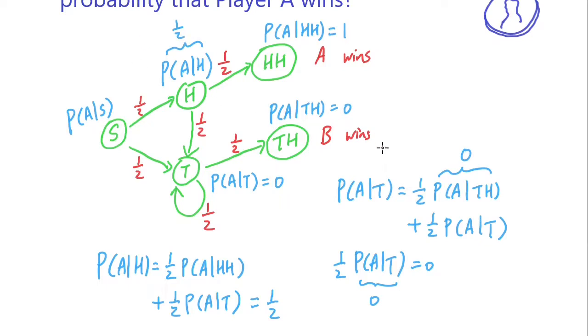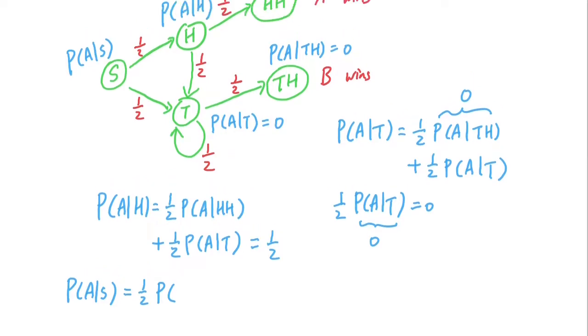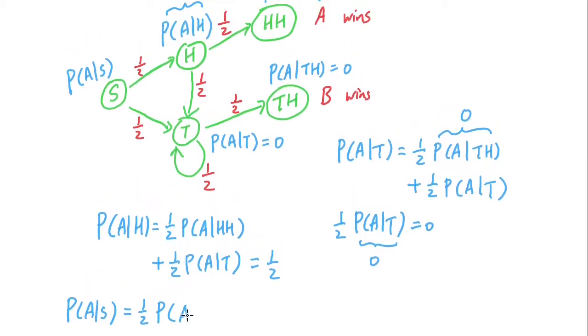Now finally, we can solve for P(A|S). There's one half of a chance of state going into state H. So P(A) is equal to one half P(A|H) plus one half P(A|T).